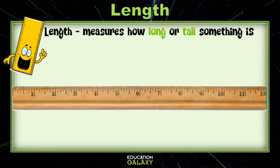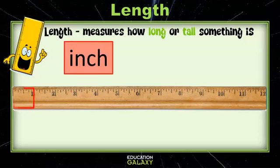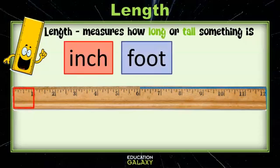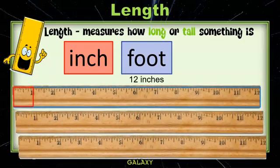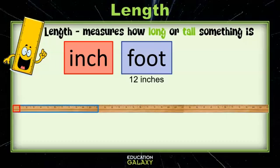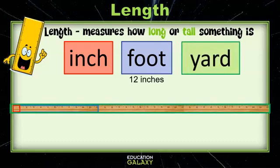Length measures how long or tall something is. We can measure length using the inch, the foot, which is 12 inches as you can see from our ruler. Or we can measure length using yards. Yards is three rulers put together — a yard is three feet or 36 inches.